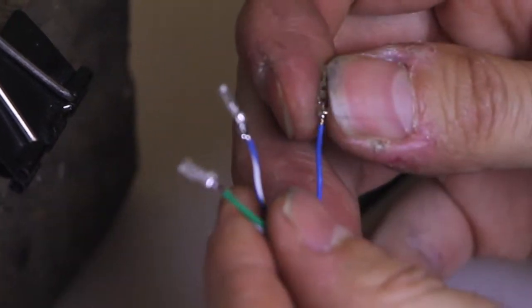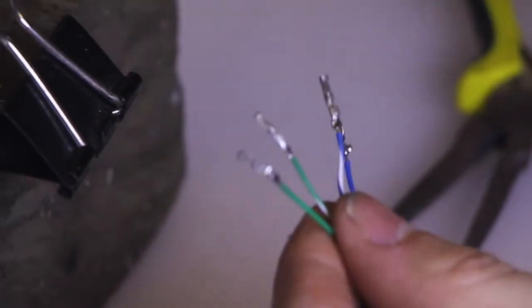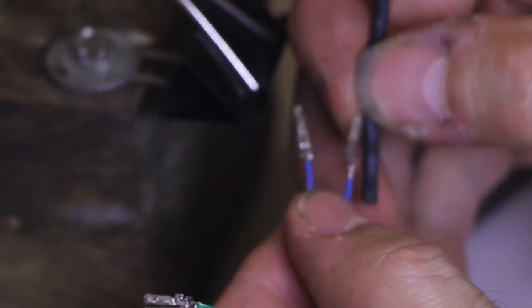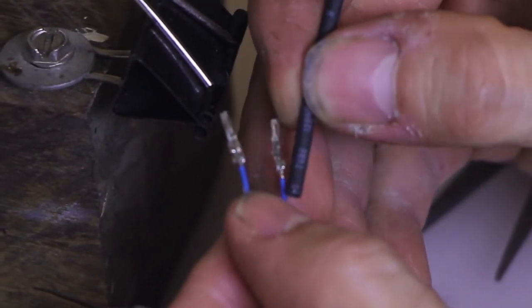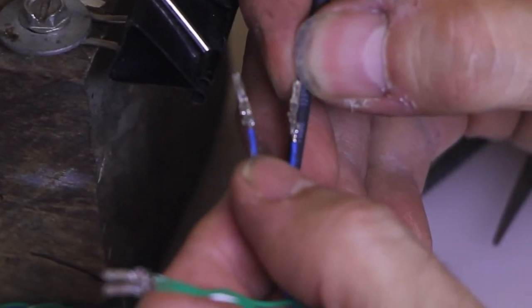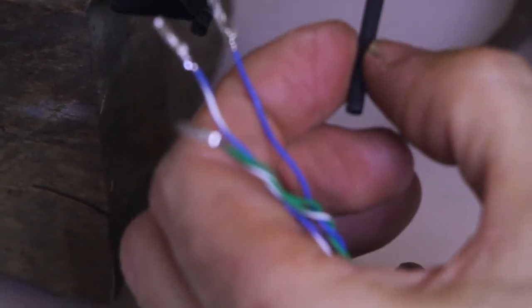So now we're going to grab four bits of heat shrink and we want to cover it from the tip of the crimp probably to about four millimeters onto the insulation. So about that long. Let's cut four pieces.